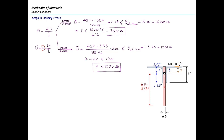We obtained two limiting values for P: 7,530 lb governed by steel stress and 18,400 lb governed by wood stress. The maximum load the beam can take is the minimum of the two: P_max = 7,530 lb. That is the final answer.